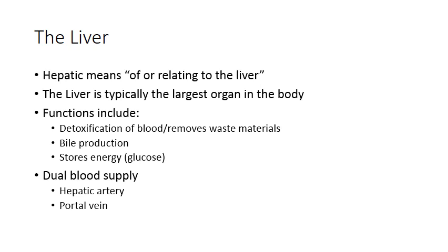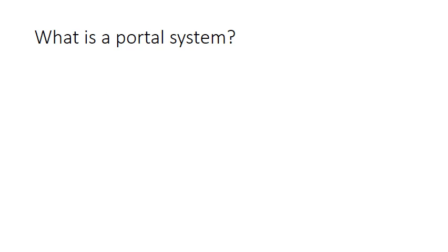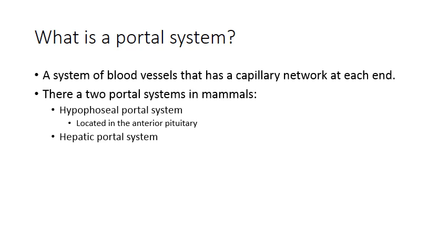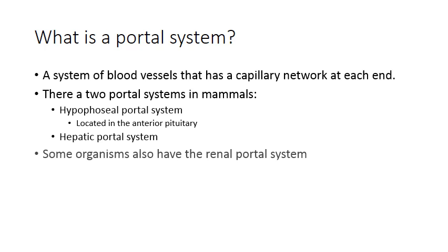The liver has blood coming to it through the hepatic artery and through the portal vein. A portal system is a system of blood vessels that has a capillary network at each end. There are two main portal systems in mammals: the hypophyseal portal system, located in your anterior pituitary, and the hepatic portal system relating to the liver. The hypophyseal portal system maintains a concentration gradient of hormones coming from the hypothalamus down to the pituitary.